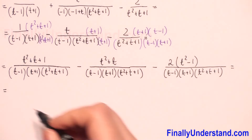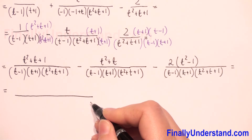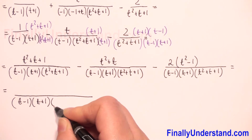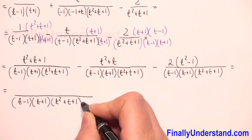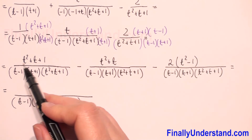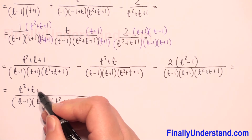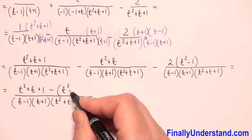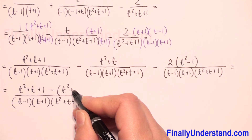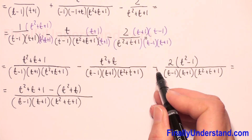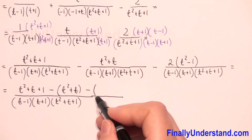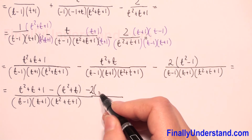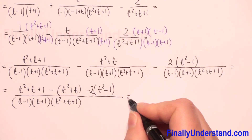Now that we have the same denominator, we combine the numerators. We have t squared plus t plus one, then negative sign so we open parentheses and write t squared plus t, then another negative sign so we open parentheses and write two times t squared minus one.